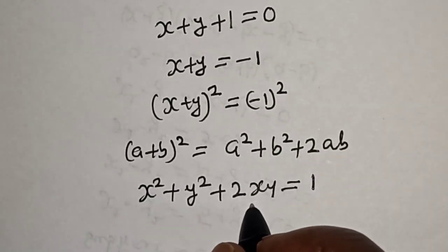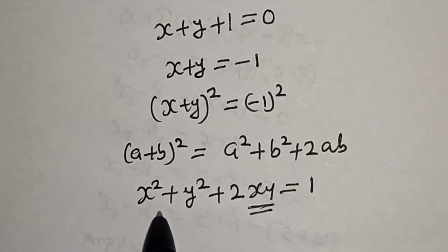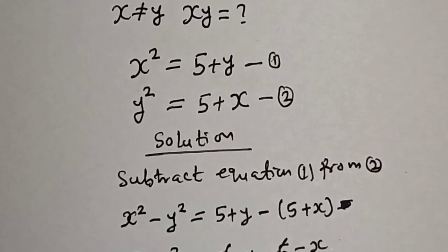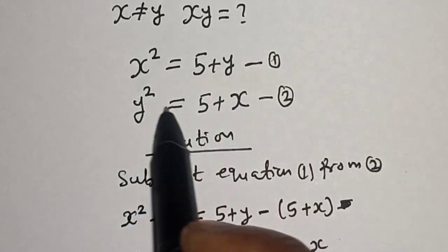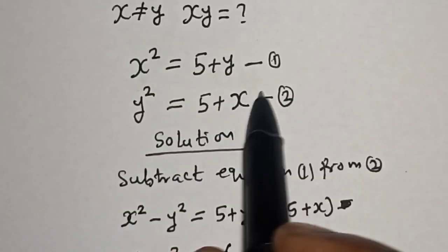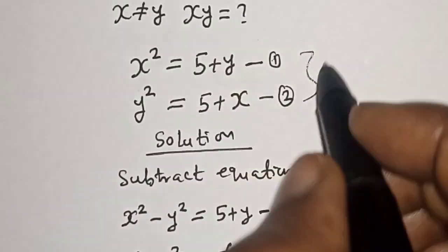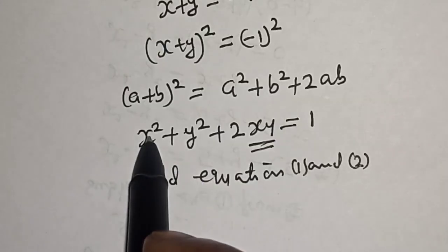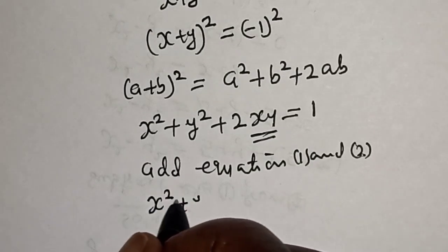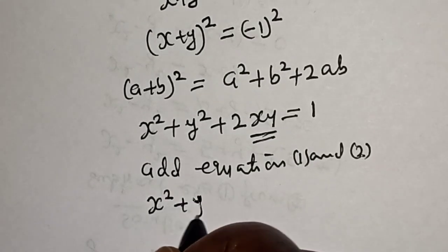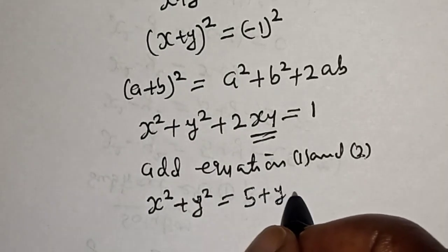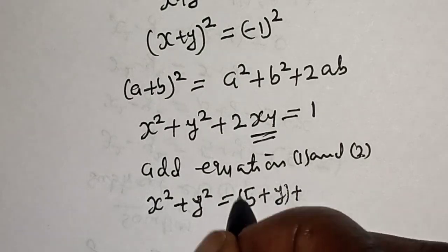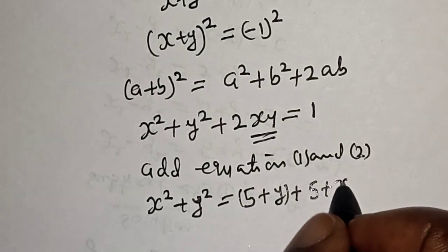Now we are looking for the value of xy, but we need to know the value of x square plus y square. From equation 1, x square is equal to 5 plus y, and y square is equal to 5 plus x. Let's add equations 1 and 2 together to get x square plus y square, which equals 5 plus y plus 5 plus x.